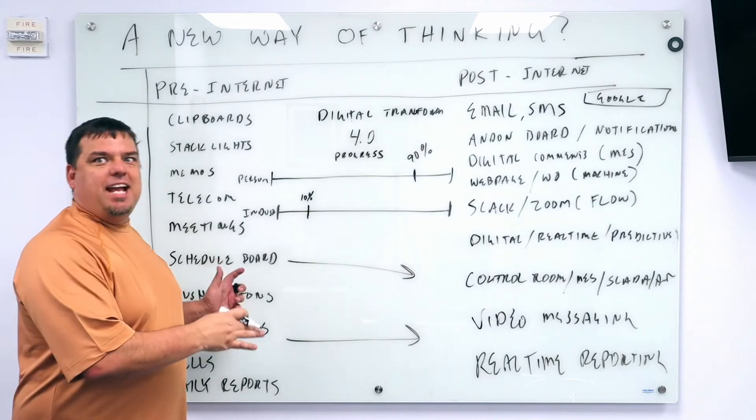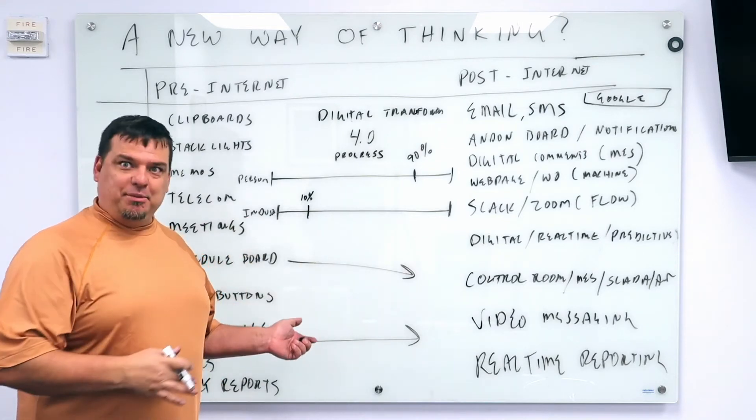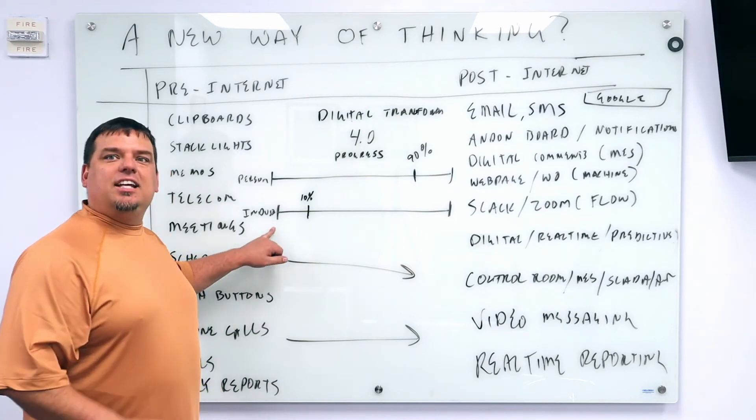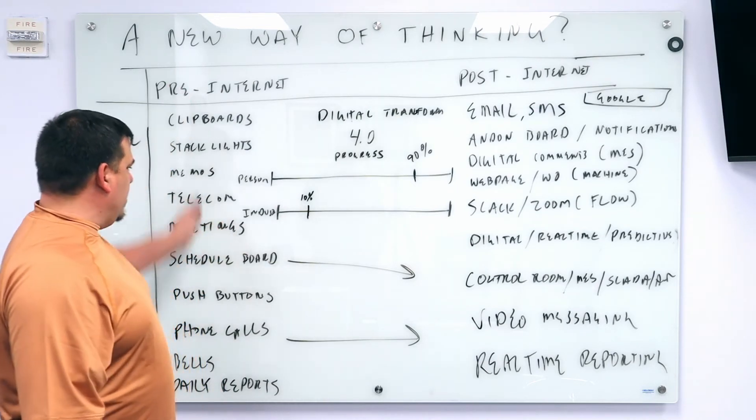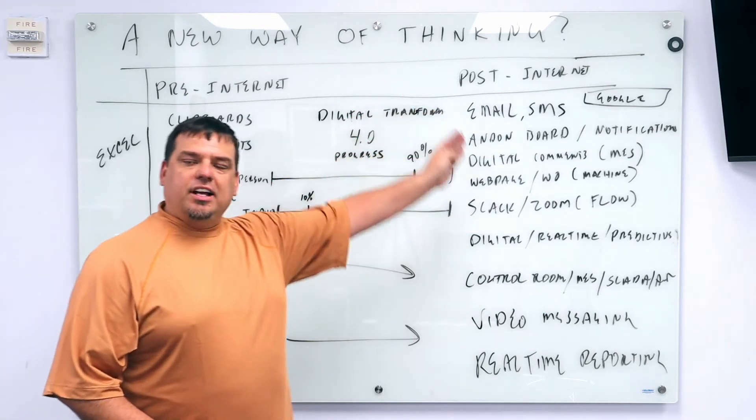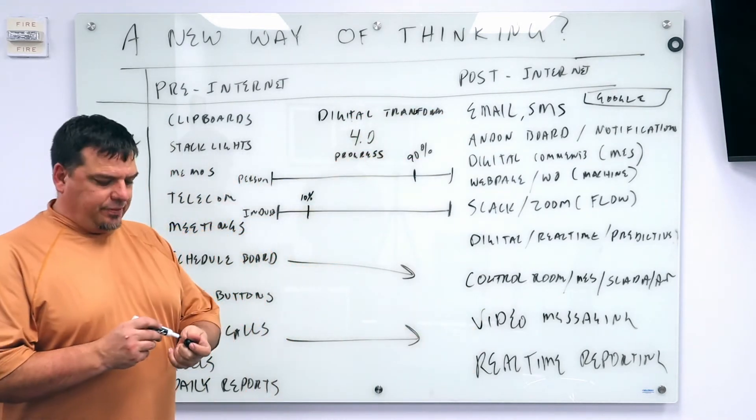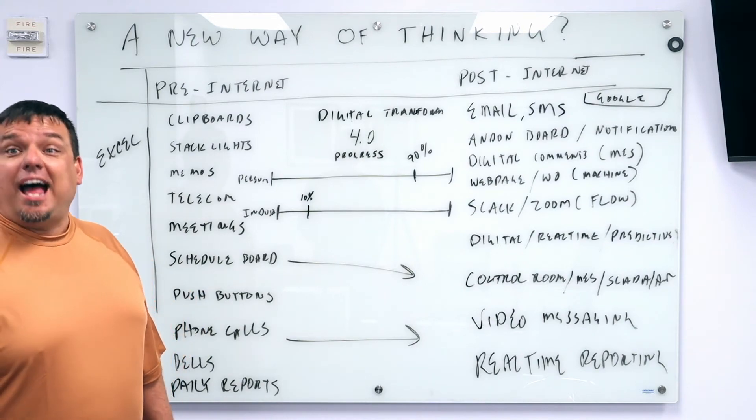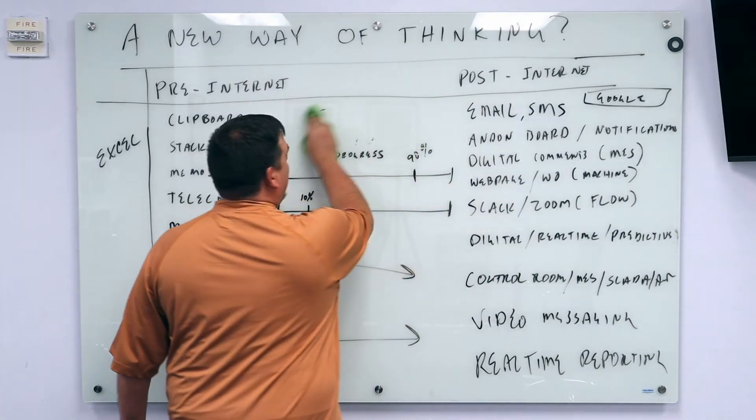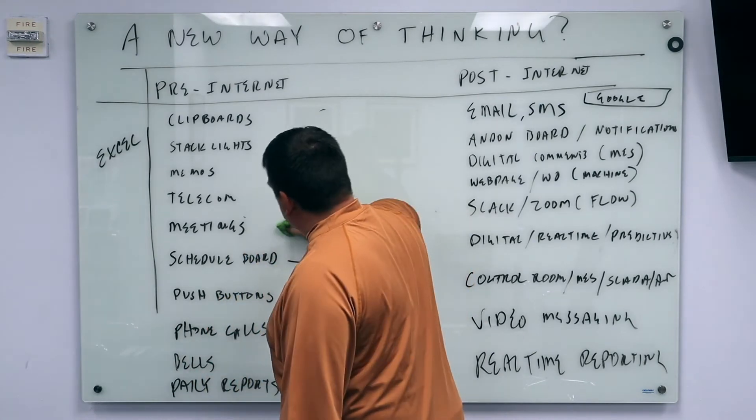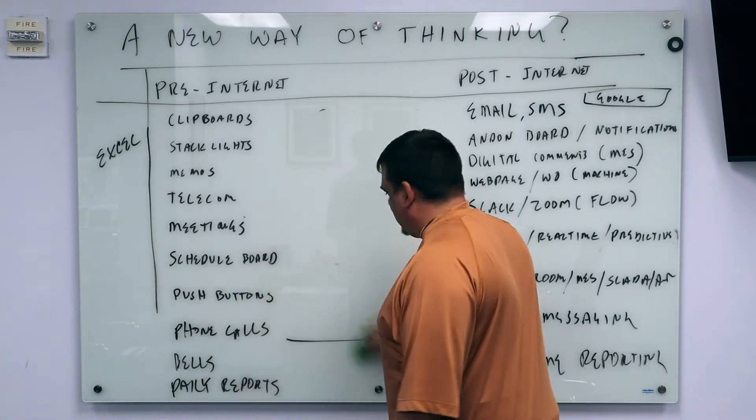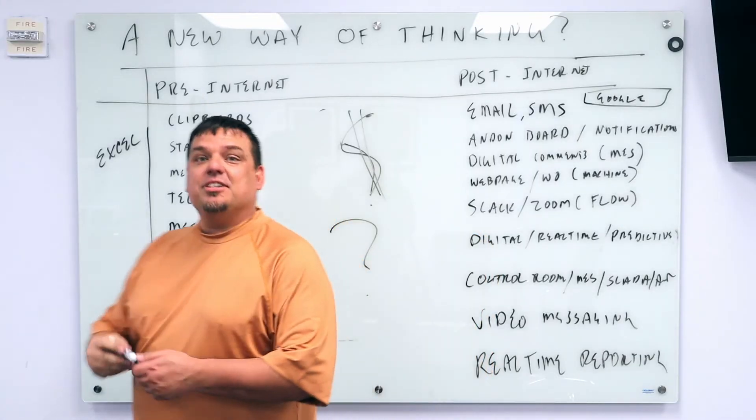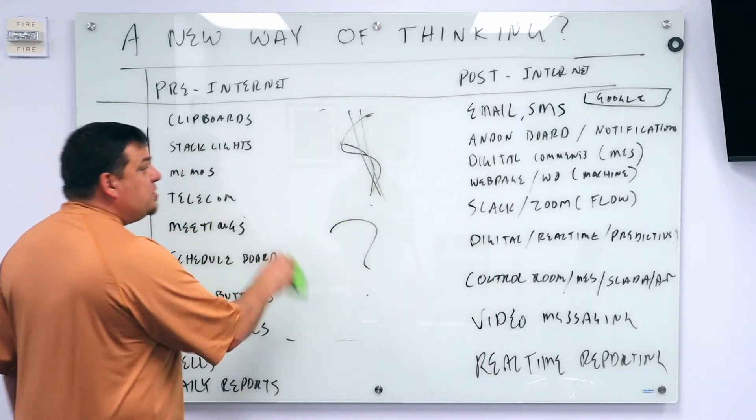Now we've already made the compelling argument of why this stuff matters. The question is, why hasn't industry gone from the pre-internet days to the post-internet days? What's the reason? Industry is slow to change, bureaucracy. They don't know how. You won't be able to find a single organization that says we don't need to do this. The answer is how. They don't know how.